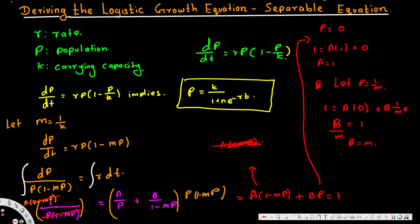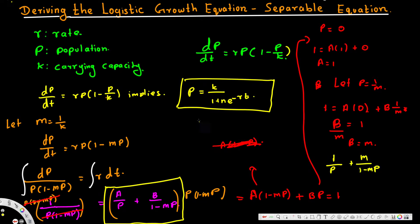Now we have A equal to 1 and B equal to m. We substitute back into the partial fraction equation: instead of A over p we put 1 over p, and instead of B over (1 minus mp) we put m over (1 minus mp). The whole thing equals the integral of r·dt.